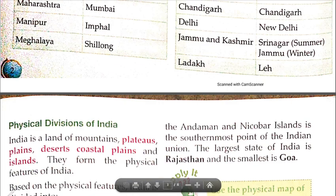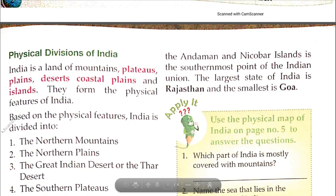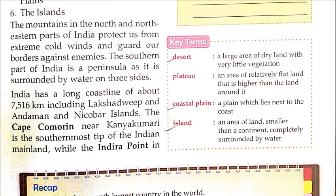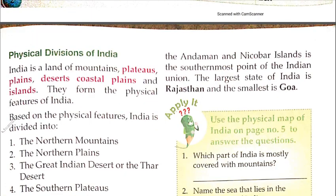While the Indira Point in the Andaman and Nicobar Islands is the southernmost point of the Indian Union. Union here means including both states and union territories. Cape Comorin refers to just the states, but Indira Point is the southernmost point when we include both states and union territories together.